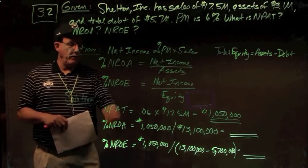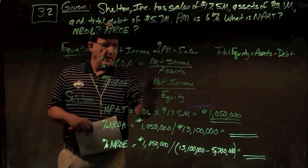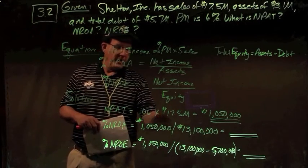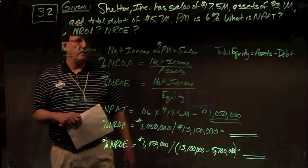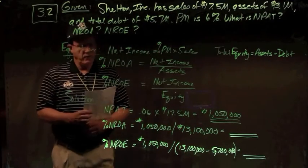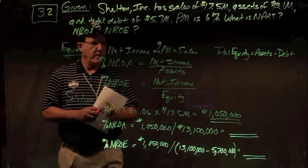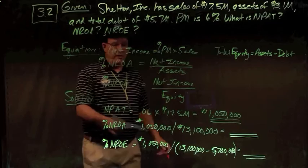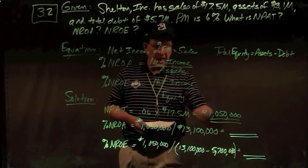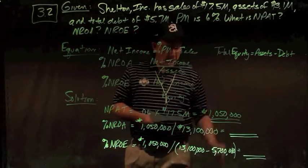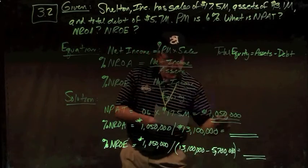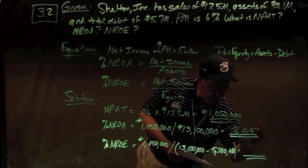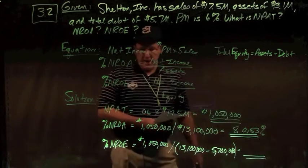To get our net income first, we take the 6% profit margin times $17.5 million of sales and we get $1,050,000 for our net income. We'll use that number when we calculate NROA and NROE. So net return on assets is $1,050,000 divided by total assets of $13.1 million, giving us 8.0153% for NROA.